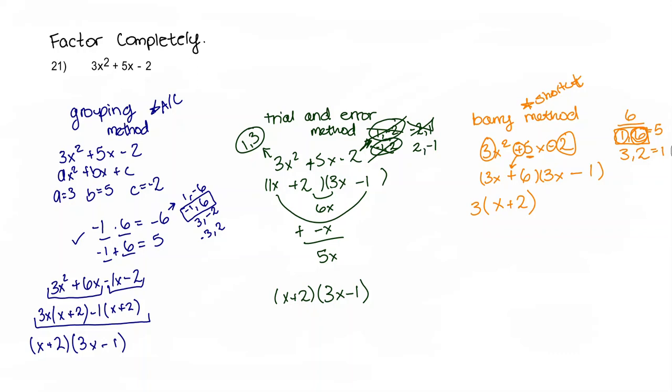And then here, I don't have a GCF. So I'm just going to bring that down, 3x minus 1. Then I'm just going to erase that like it never happened. And I'm left with x plus 2 times 3x minus 1. And that is our answer.